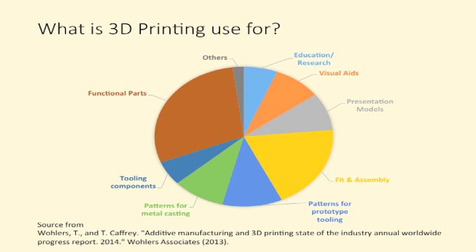In this slide, you can see a pie chart from the Wallace Report 2004 that shows the uses of 3D printing by companies. This is a survey, and as you can see from the pie chart, the majority of usage is in functional parts, and the second largest is in fit and assembly for testing of new components or products.